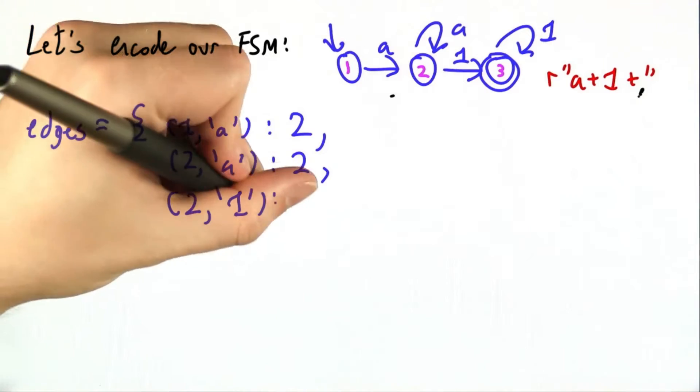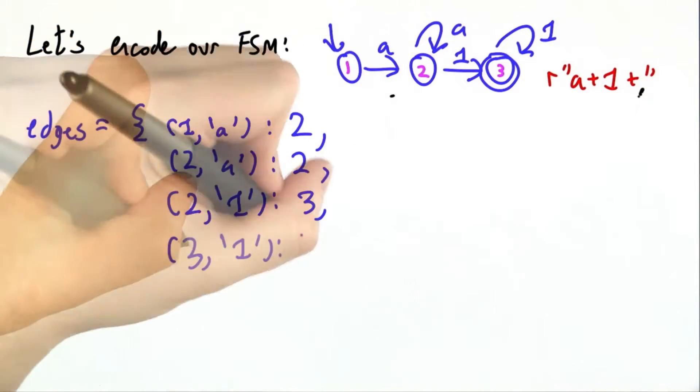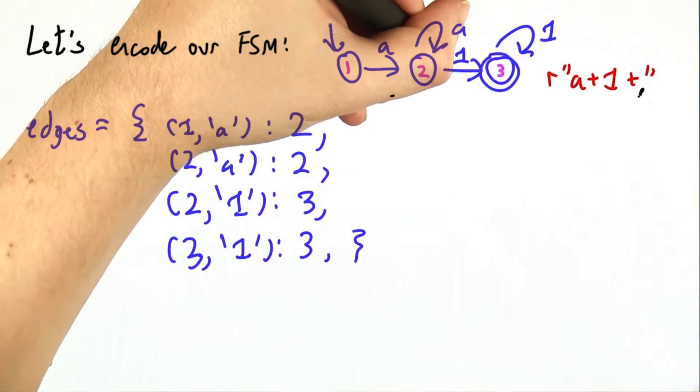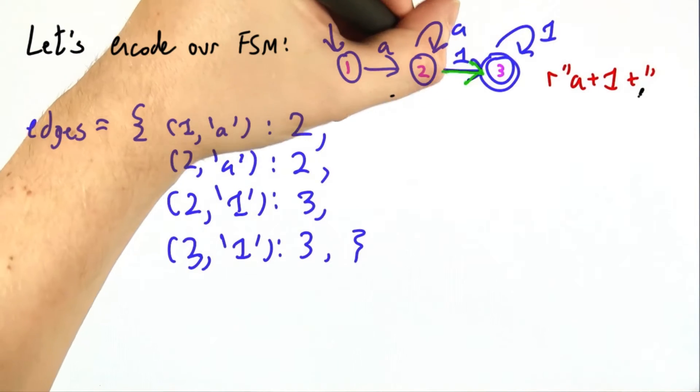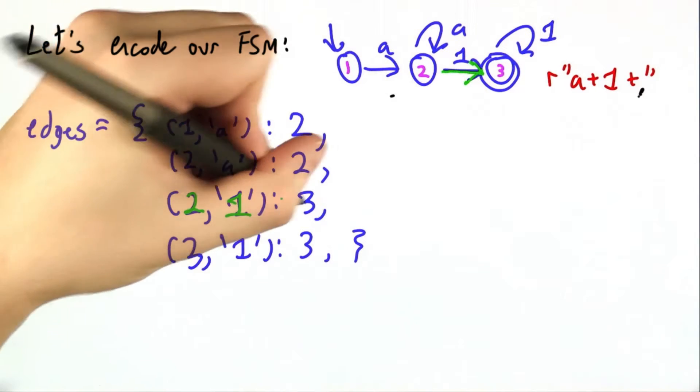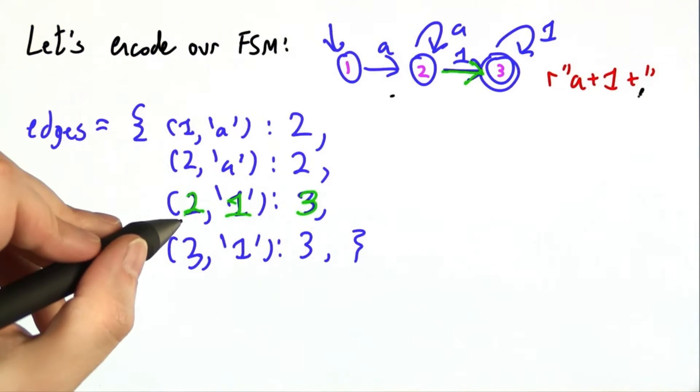If we are on state 2 and we see a 1, we go to state 3, and state 3 and 1 stays the same. Let me just highlight one of these. This particular edge, from 2 to 3 on a 1, corresponds to this entry in our edges mapping.